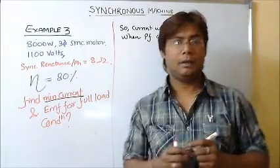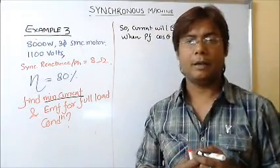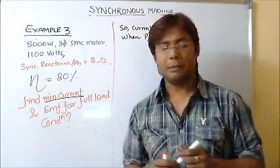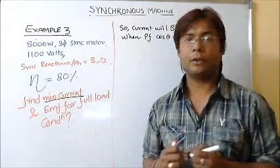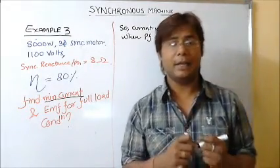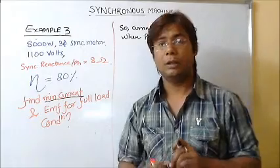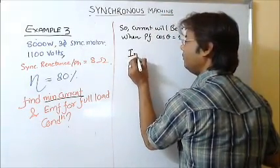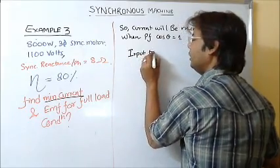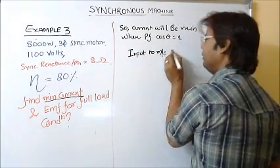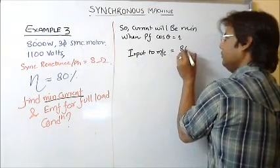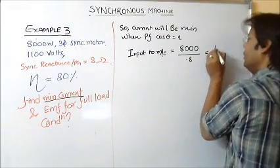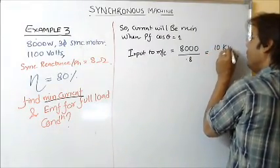This is the only condition which will give us the exact path to find the EMF and the minimum current. Since the efficiency is given, we can find the input to the motor. Input to the machine will be equal to 8000 divided by 0.8, which is equal to 10 kilowatts.